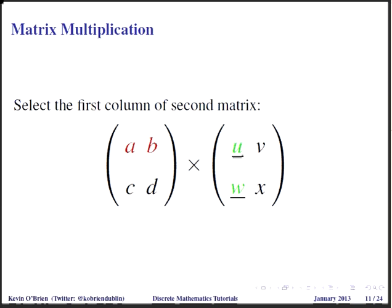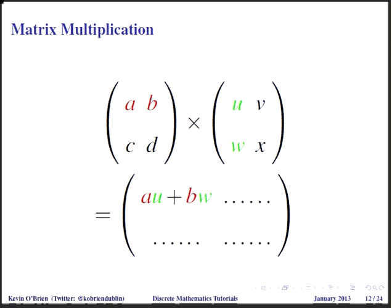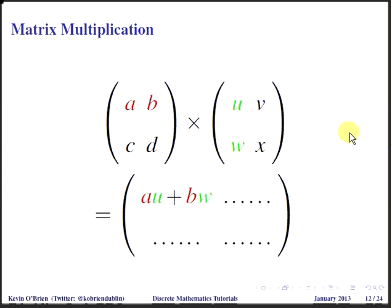I have this first column selected, so I'm going to move on. What we're going to do is calculate a pairwise multiplication and add up all the values. The first pair of values, A and U, we multiply them together — AU — and then we add the next product of the pair. The next pair of values is B and W. We multiply them to find their product, BW, and add that to the overall total. This is how we construct the first element of our resultant matrix: AU plus BW. So it's the sum of the pairwise multiplications — pick each pair of values, multiply them, and then add them all together.